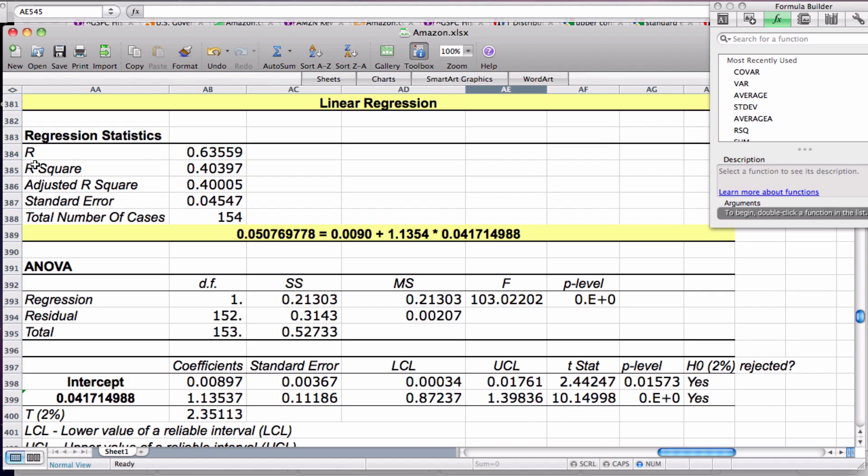R is the correlation, and it measures how two variables move in relation to each other. R squared, or the coefficient of determination, or the covariance, is the proportion of variability in Y that is explained by the independent variable, the X variable, in the model.